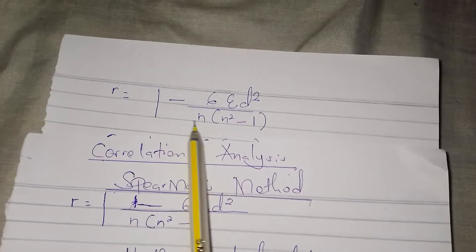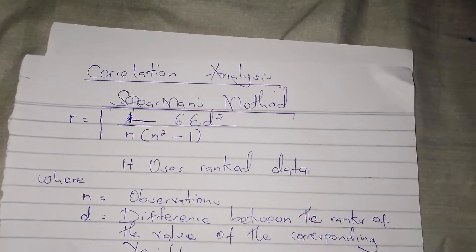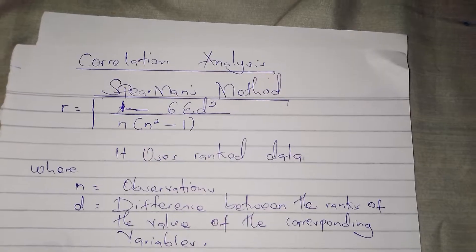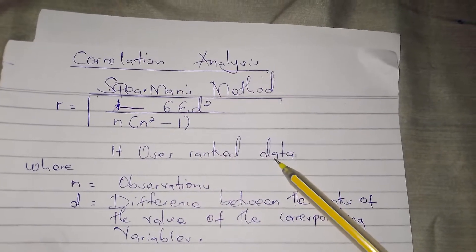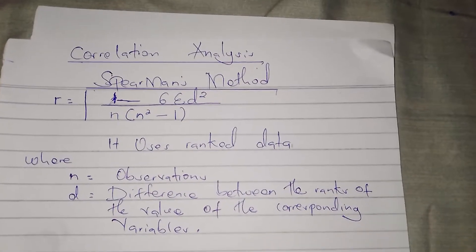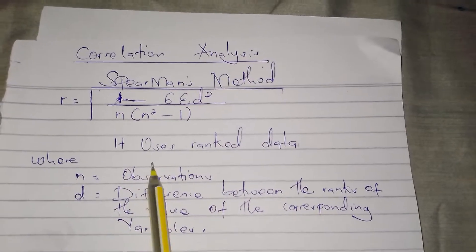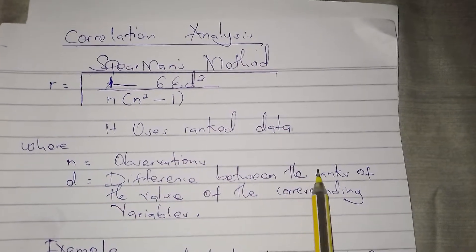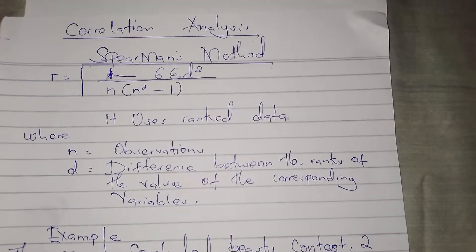The difference between Carl Pearson's method, which we looked at in the previous video, and Spearman's method is that Spearman's uses ranked data — data that has ranks like first, second, third. In our formula, n represents the number of observations and d is the difference between the ranks of the corresponding variables.